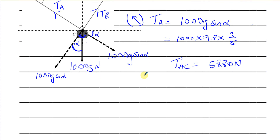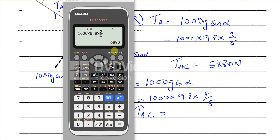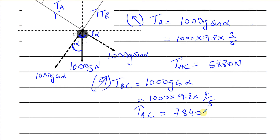Now we find the tension in cable BC. Resolving 1,000G in the direction of TB — going into the angle — gives 1,000G times cosine alpha, which is 1,000 times 9.8 times four-fifths. Taking our previous answer and changing three-fifths to four-fifths, that gives us 7,840 Newtons — a nice exact value. So we have both tensions and the question is answered.